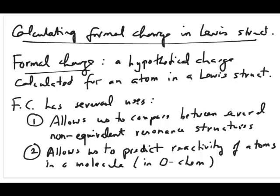There are two important uses. One is that once we calculate formal charges for all the atoms in a particular molecule, we can compare all the Lewis structures and decide which one has the best quality. The second use of formal charge is that it allows us to predict reactivity of atoms in a particular molecule that you draw a Lewis structure for.